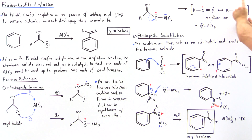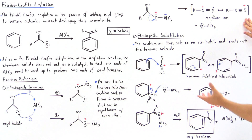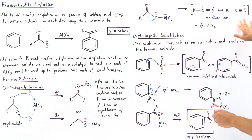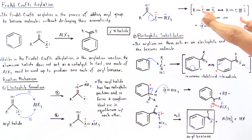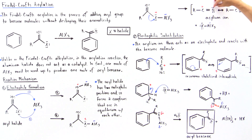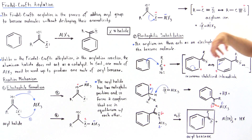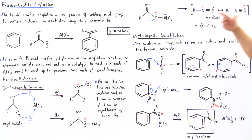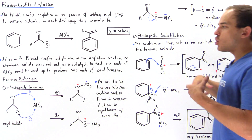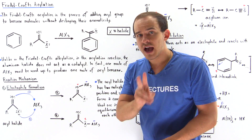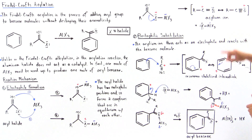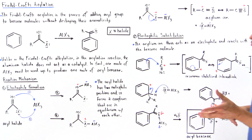This acylium ion is the Lewis acid we will use in step two to react with benzene. Notice we have resonance stabilization: if these two electrons form a triple bond — the second pi bond — we shift the positive charge from the carbon onto the oxygen. This is a stabilizing effect. So via two steps in section one, we form our acylium ion, which is our electrophile.